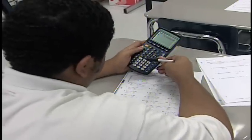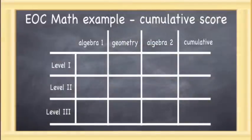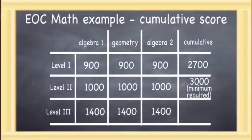here's an example involving the three math EOCs: Algebra 1, Geometry, and Algebra 2. This is only an example since the Texas Education Agency has not yet established the passing scale score requirements for the EOCs. In this example, we've made a minimum scale score requirement of 900 on each of the three math EOC assessments.